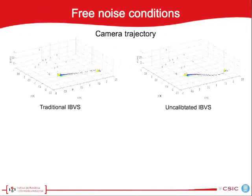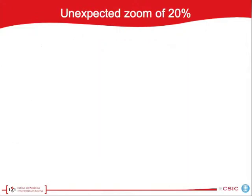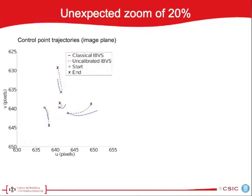Looking at the simulations of the approach under a noise-free condition, with an initial and desired camera point of view, we can see how controlling the 6 degrees of freedom, both methods reach the goal with an exponential decrease of the reprojection error in the image plane. But when an unexpected change in the focal length appears — such as a 20% zoom — the traditional visual servo does not drive the robot to the desired pose. You can see how only the uncalibrated method reaches the goal, and the traditional approach never decreases the reprojection error to zero.